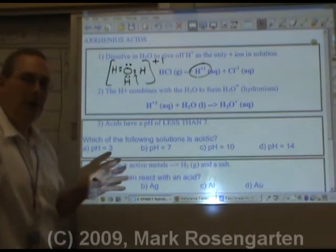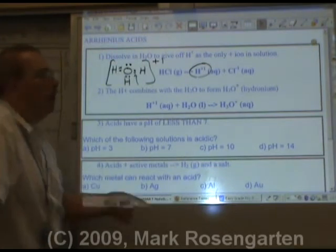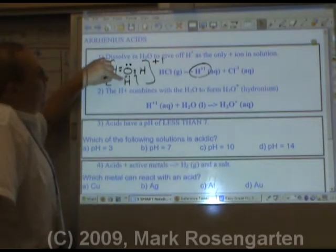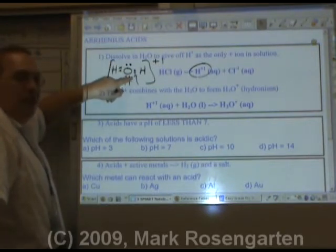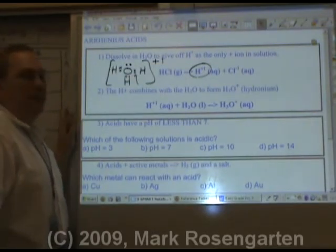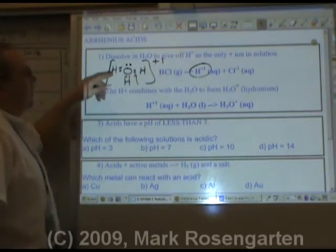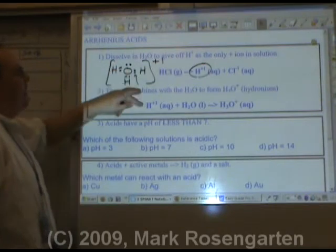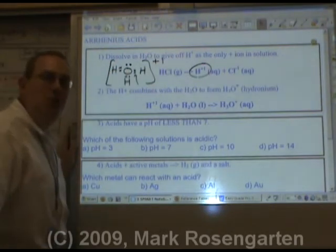This bond right here is called a coordinate covalent bond. It's different from a normal chemical bond, just in how it forms. Remember, a covalent bond is one electron from one atom, one electron from the other atom, they share them. In a coordinate covalent bond, both of the shared electrons come from the same atom, and the other atom is simply mooching off it.